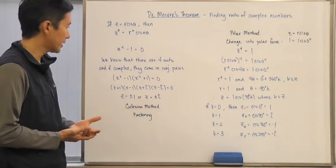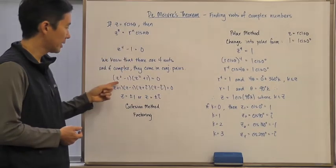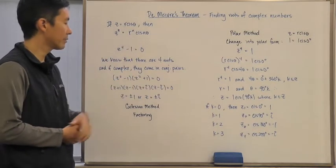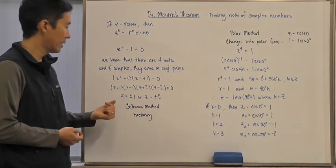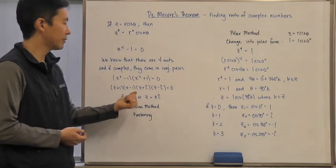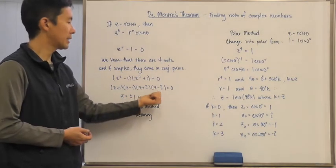Now, unfortunately for us, we can actually factor this to z squared minus one and z squared plus one equals zero. We can further factor each one of these to z plus one, z minus one, and z plus i, z minus i.